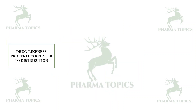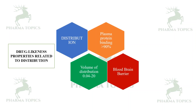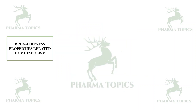For distribution, the features taken into consideration are plasma protein binding (approximately greater than 90%), volume of distribution between 0.04 and 20 L/kg, and whether the compound crosses the blood-brain barrier.